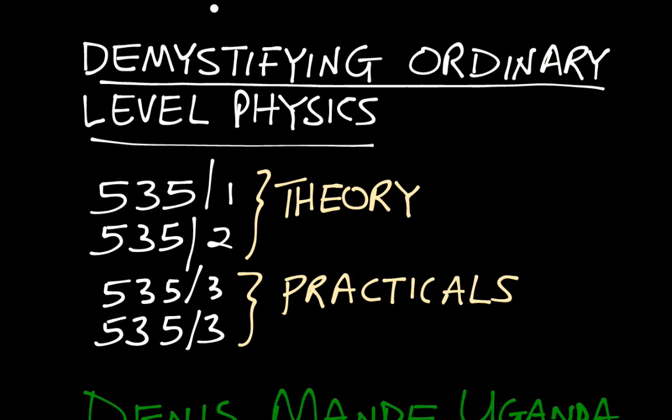So I have named this series of videos the O-level physics revision series, where we're going to handle the O-level syllabus. The physics papers are coded 535. 535/1 is paper one, 535/2 is paper two. These two make the theory. The theory consists of paper one and paper two.